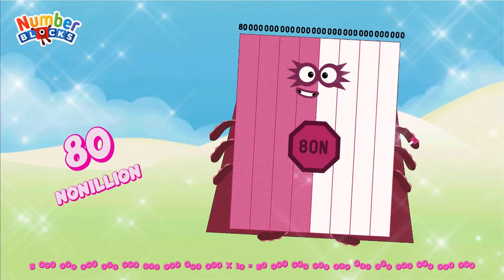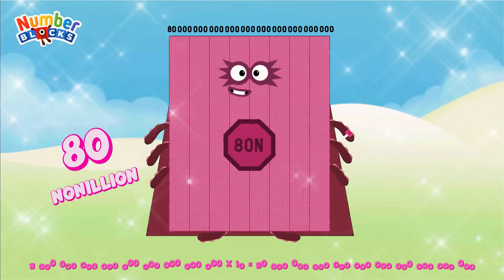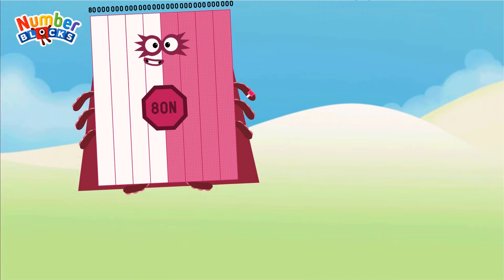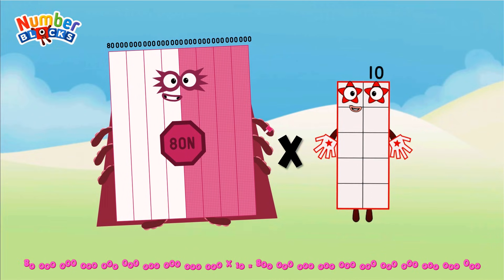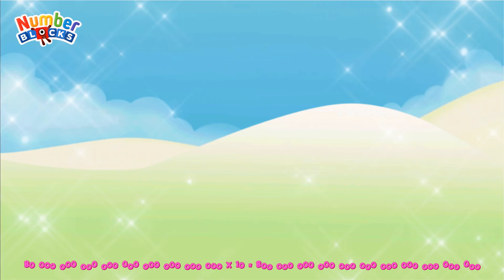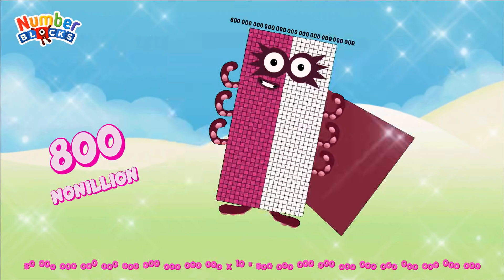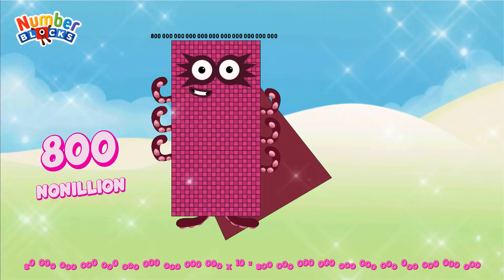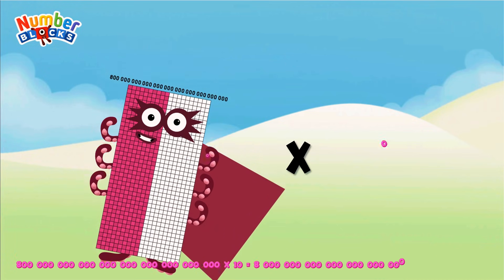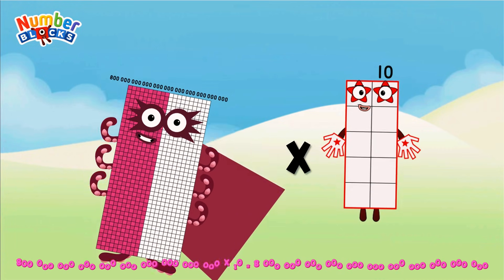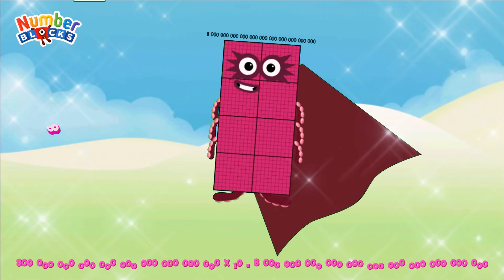80 nonillion multiplied by 10 equals 800 nonillion. 800 nonillion multiplied by 10 equals 8 decillion.